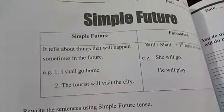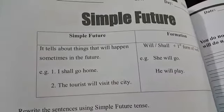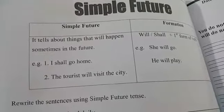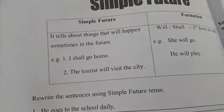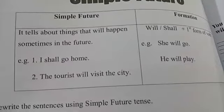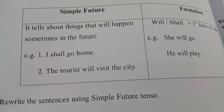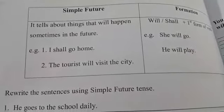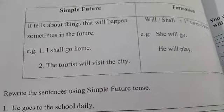The workbook page number 58. You know very well what is the simple future tense, but let's have a look. The simple future tense tells about things that will happen sometime in the future. For example: 'I shall go home.' The tourist will visit the city.